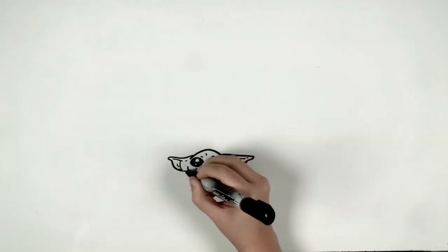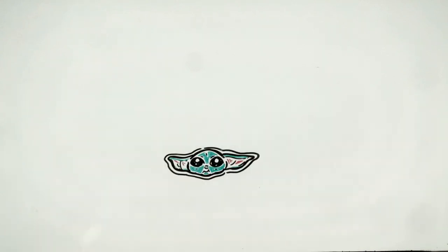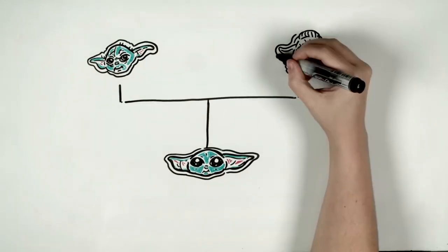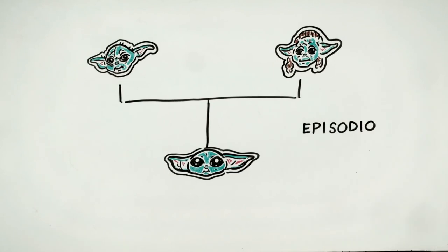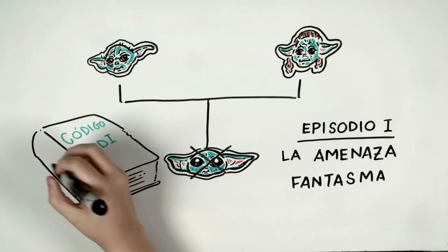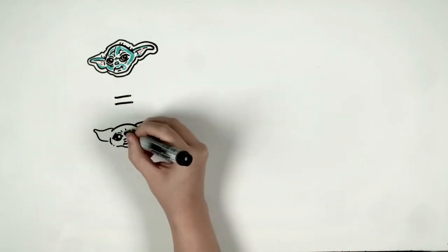One of the theories is that Baby Yoda is Yoda's son, and his mother is Yaddle, a female creature of the same species that first appeared in episode 1, The Phantom Menace. And according to the theory, they hid Baby Yoda for having broken the Jedi code by having a child.